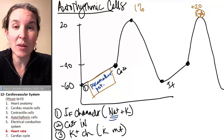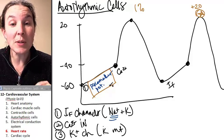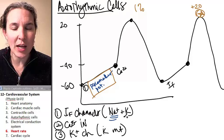So here are my auto-rhythmic cells. This is their pacemaker potential. And remember, the pacemaker potential existed because of these leaky sodium and potassium channels.